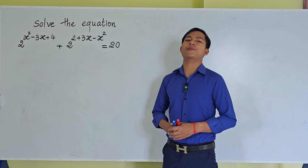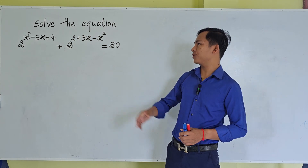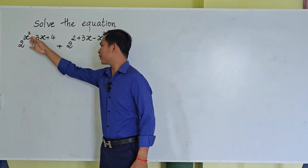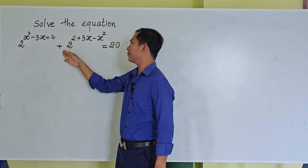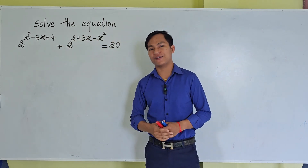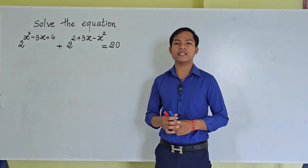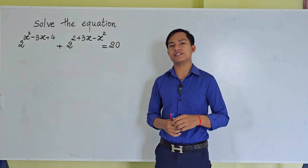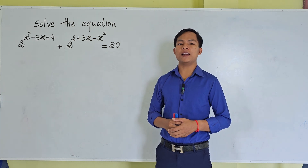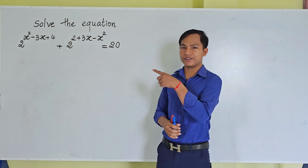Hello everyone, welcome to my YouTube channel. In this video we are showing you how to solve the exponential equation: 2^(x²-3x+4) + 2^(2+3x-x²) = 20. Do you know how to solve this? If you do, please try it first, then come back to watch from beginning to end to verify your solution. Before we go to the solution, please don't forget to subscribe to my channel for more exciting videos.